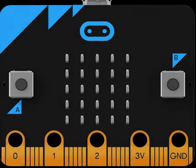A microbit is a pocket-sized computer that is 70 times smaller and 18 times faster than the original microcomputers used in schools.